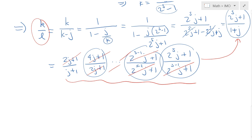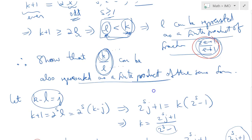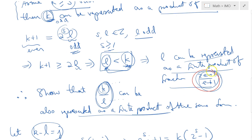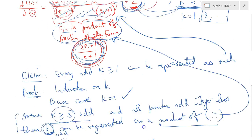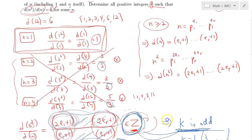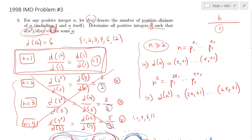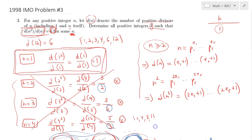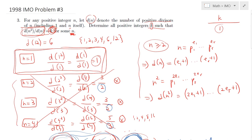We have shown that every odd positive integer k can be expressed as a finite product of fractions of the form (2e+1)/(e+1), and therefore is achievable by some n. Combined with the earlier argument that k must be odd, the answer is: all positive odd integers. I hope you enjoyed it — see you in the next lecture.